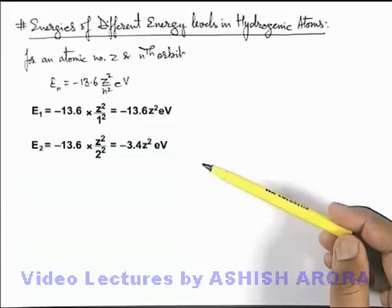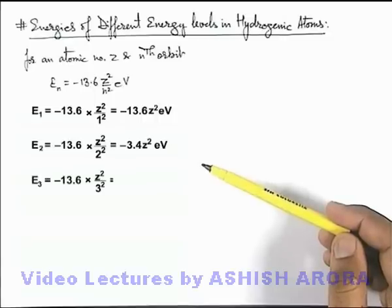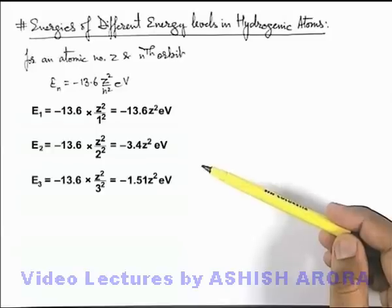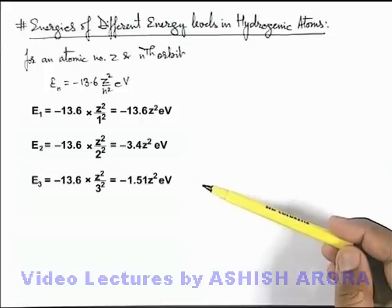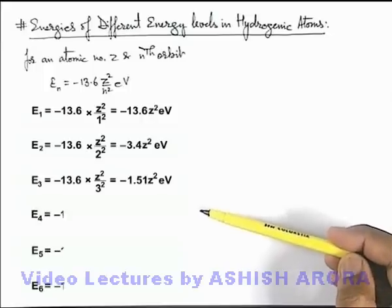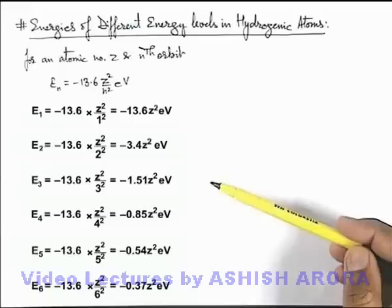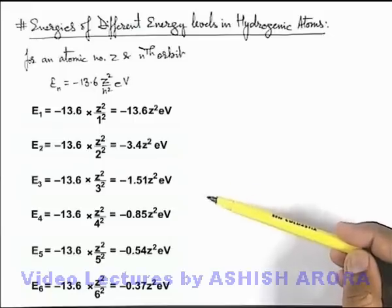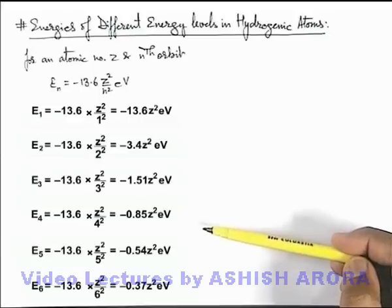In another case, if we substitute n equals 3, the energy of third orbit will be 13.6 by 3 squared into Z squared electron volts. That will be minus 1.51 Z squared electron volts. Similarly from n equals 4, 5, and 6, the values of energies we are getting are minus 0.85 Z squared eV, minus 0.54 Z squared eV, and minus 0.37 Z squared electron volts.